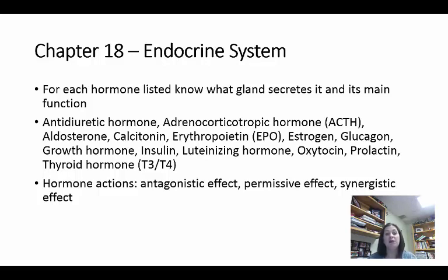Aldosterone is released by the adrenal cortex and helps with water retention in the kidneys. It makes the kidneys hold on to salt — sodium (Na) — which then attracts water. So it does a similar thing to ADH but in a different way. Erythropoietin is actually released by the kidneys — it talks to the bone marrow and causes it to start producing more red blood cells.